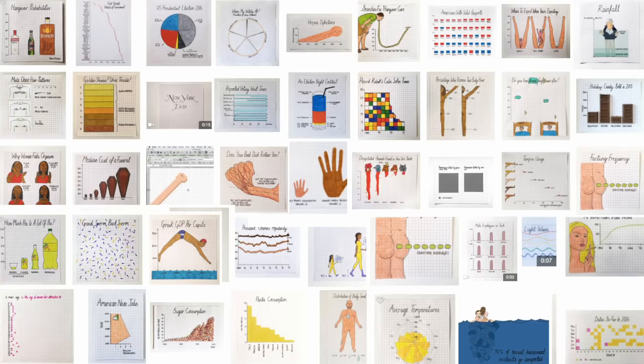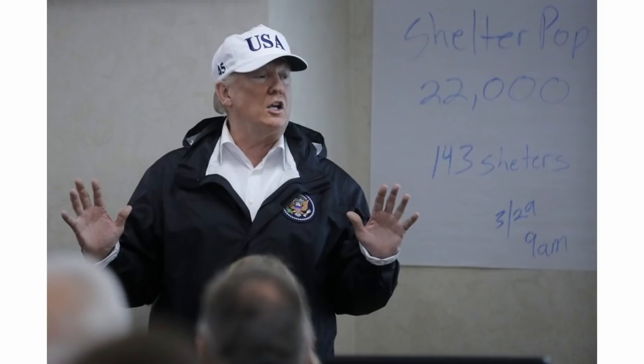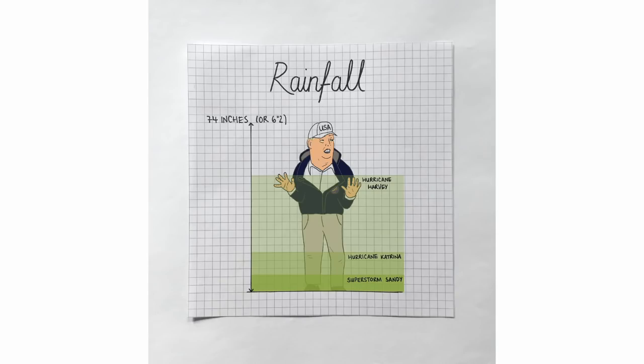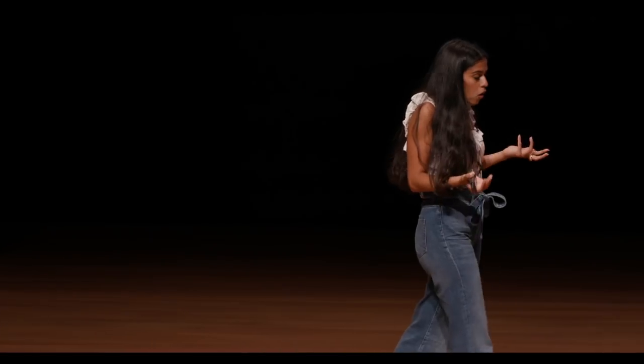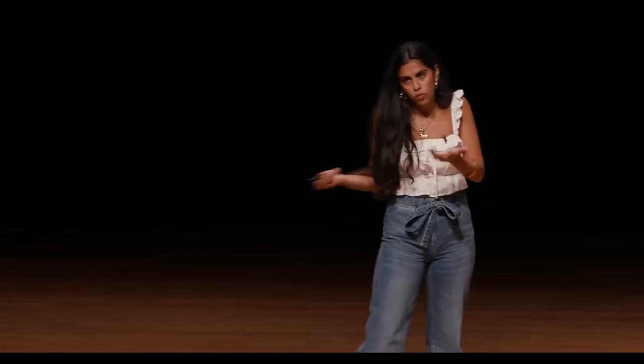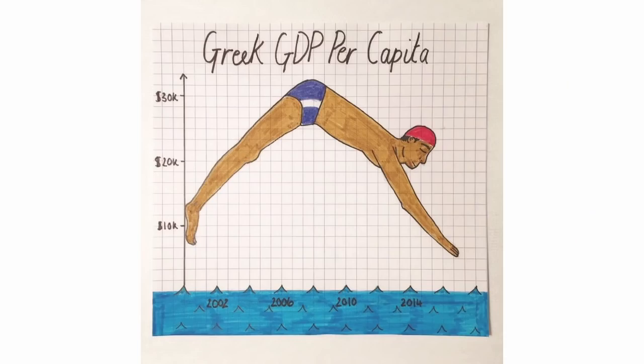My work strives to change that — I try to connect the subject matter with the depiction or visualisation itself. Very often I'm trying to write about really serious and important stuff. So after Hurricane Katrina, if you're trying to show rainfall levels, instead of a classic bar chart, why not use for scale a president who's six foot two? And if you're talking about an economy that's diving, that's in free fall, why not show a diver?